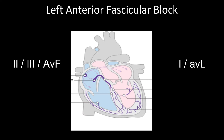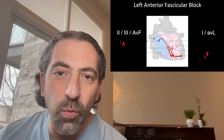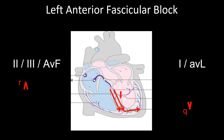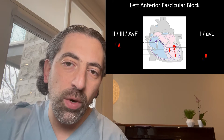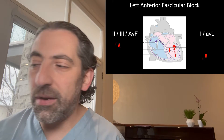In left anterior fascicle block, because electrical depolarization is blocked along the left anterior fascicle, depolarization moves normally through the right bundle and the left posterior fascicle, creating an initial positive deflection in leads 2, 3, and AVF, and an initial negative deflection in lead 1 and AVL, mainly due to septal and inferior wall depolarization through the left posterior fascicle. However, because the anterolateral part of the ventricle is no longer supplied by the His-Purkinje system, there is slow muscle-to-muscle depolarization proceeding towards the top left, shifting the vector leftward and creating left axis deviation, with a deep S wave in leads 2, 3, and AVF, and a tall R wave in leads 1 and AVL.